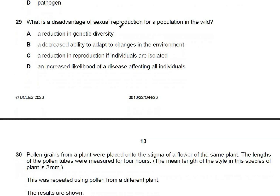Question 29: what is a disadvantage of sexual reproduction for a population in the wild? Option A — reduction in genetic diversity — is wrong, as sexual reproduction increases genetic diversity. Option B — decreased ability to adapt — is wrong, as more variation helps survival. Option C — reduction in reproduction if individuals are isolated — is correct, as isolation decreases ability to reproduce sexually. The answer is C.